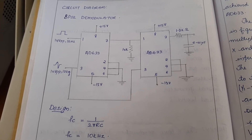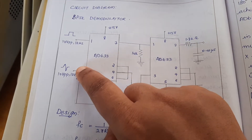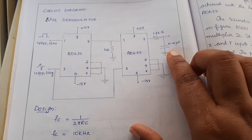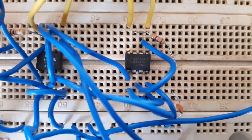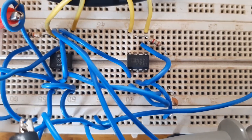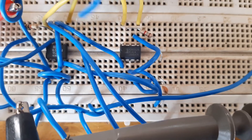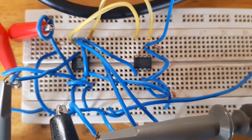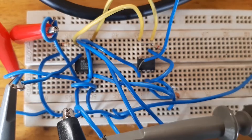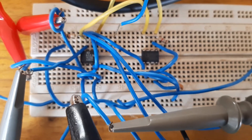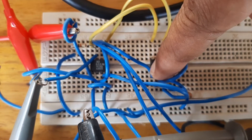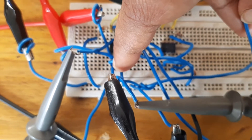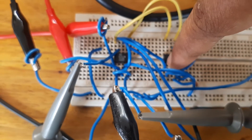The modulation part is already set up. Now we only need to wire the demodulation section. The sine wave input must be given to the third pin of the second AD633. We also need a 0.01 microfarad capacitor and a 1.8 kilohm resistor. From the output of the modulation circuit, the modulated signal is given to the first pin of the second AD633. The output from pin 7 of the first AD633 is connected to pin 1 of the second AD633. The same sine wave already connected to the first IC's third pin can simply be shorted to the third pin of the second IC.